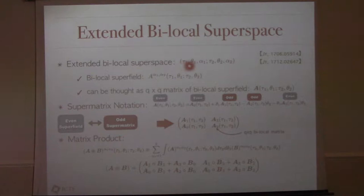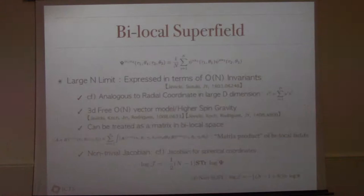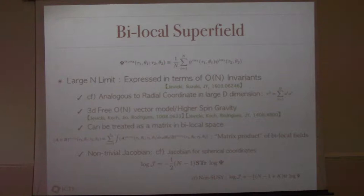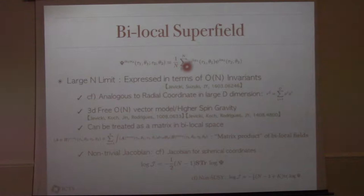The bilocal super space has coordinates tau, theta (Grassmannian variable), and alpha (flavor variable). When the original variables are used, the action is invariant under both O(N) and SO(Q). The O(N) is treated as gauge symmetry — we take the O(N)-invariant sector — and SO(Q) is treated as global symmetry. Q is finite while N is taken large.